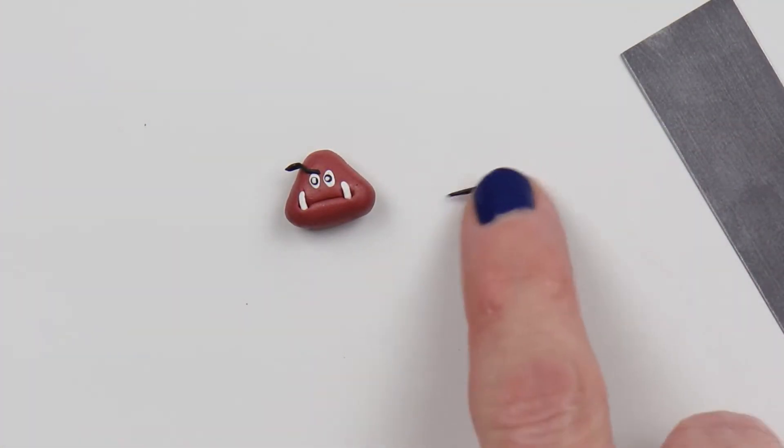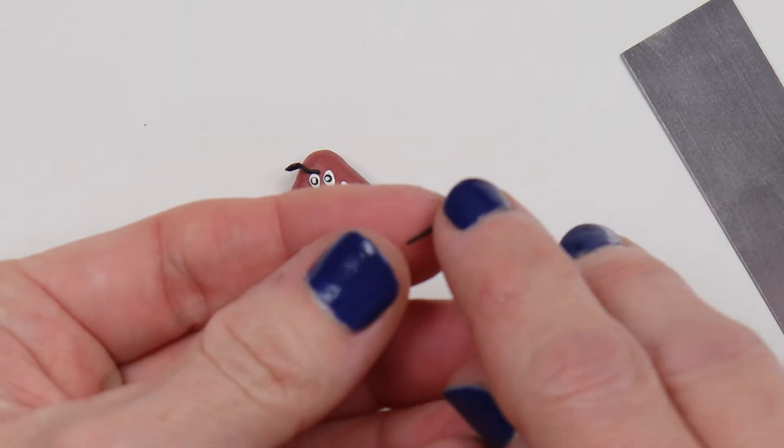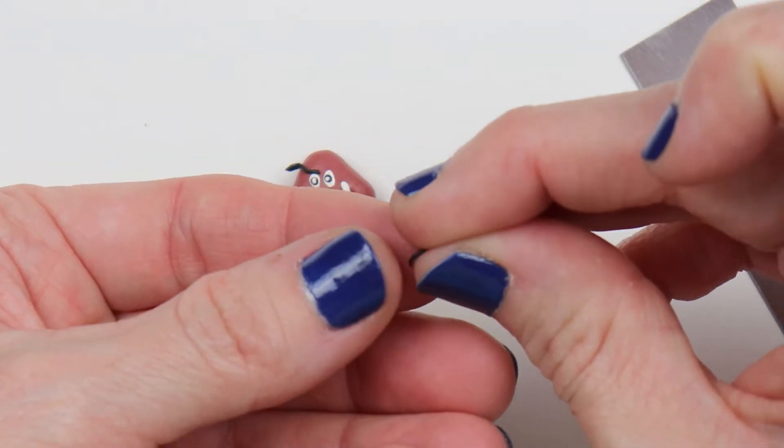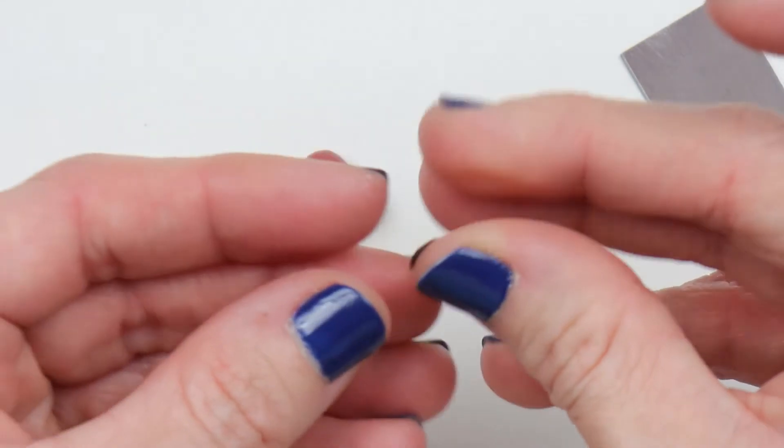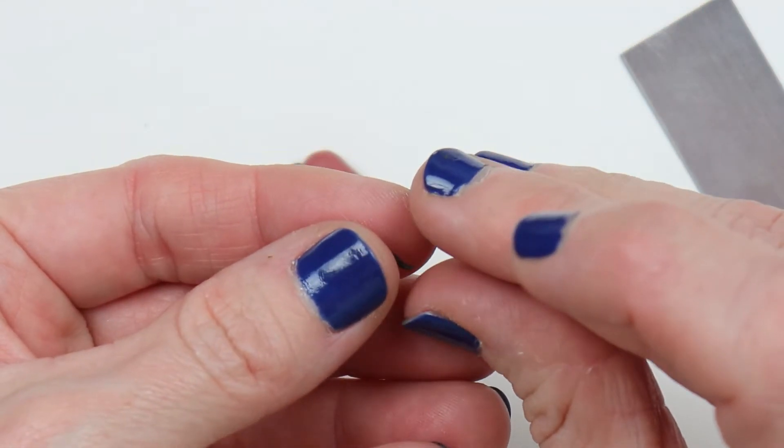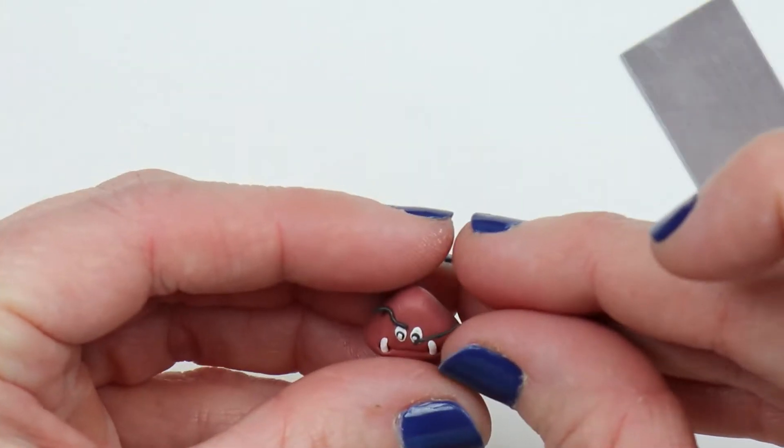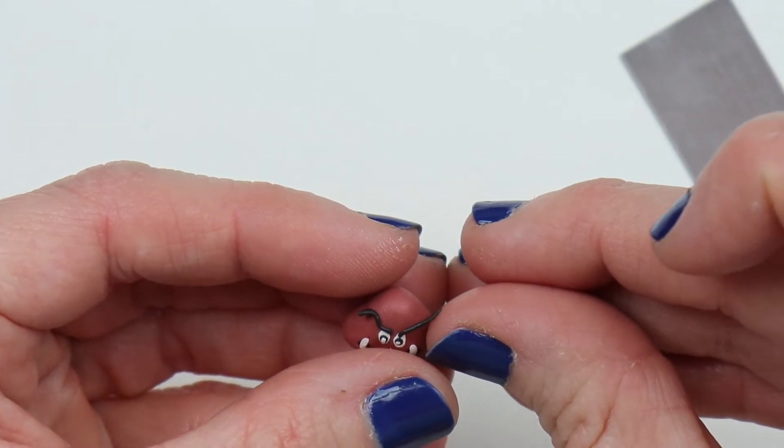Roll out a thin piece of black clay. Flatten one end, and then you're going to kind of want to curl it up into a little whoosh. This is going to be his eyebrow. These little goombas have big, angry eyebrows. You can bend it and shape it once you place it on.